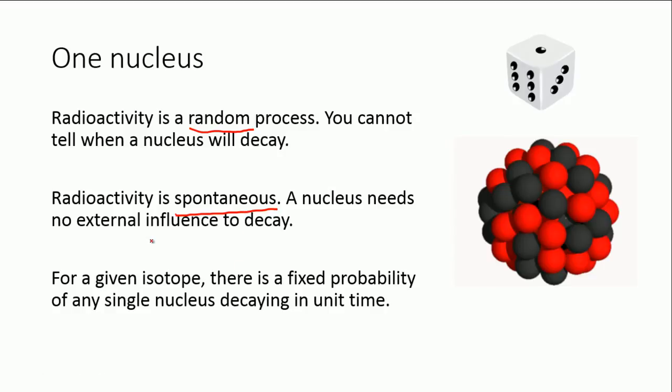For any given isotope, so let's take maybe carbon-14 as an example, there is a fixed probability for that particular isotope of carbon that a single nucleus will decay in per second or in a unit time. A fixed probability. That depends on the nucleus itself. Uranium-238, for example, as an alpha-emitter, has a different probability that one of the uranium nuclei will decay to the carbon-14. But for each individual isotope, the probability, i.e. the decay constant, which we're going to look at in a minute, is fixed.